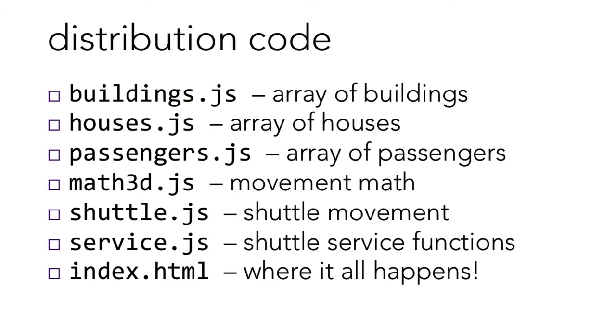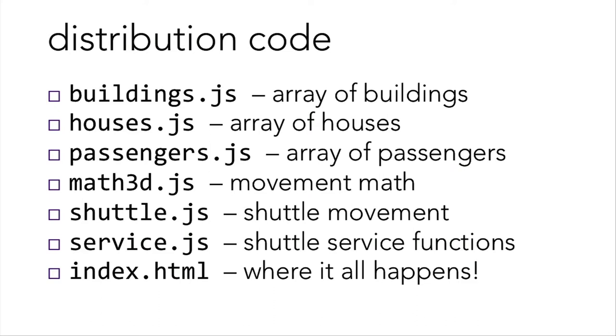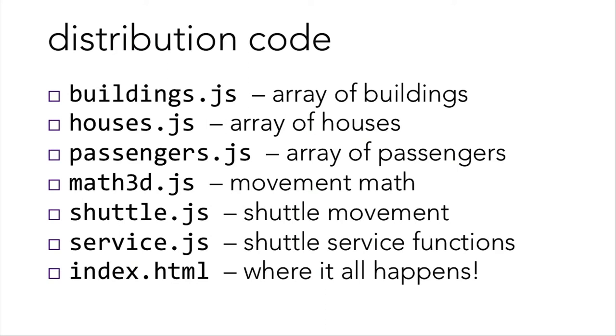In the JavaScript folder, there will be a bunch of JavaScript files. There's buildings.js, which contains an array of buildings around Harvard campus with their information and position. Houses.js is an array of Harvard residential houses with their latitudes and longitudes. Passengers.js contains an array of passengers, the CS50 staff members, that you'll be bringing back to their residential houses. Math3d.js contains a lot of functions to do with the movement. If you're mathematically minded, you're welcome to take a look, but you don't need to understand everything in there.